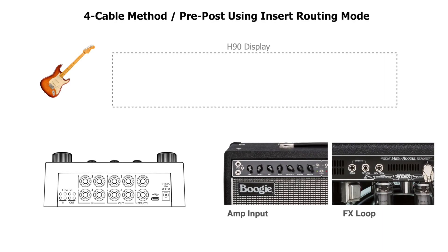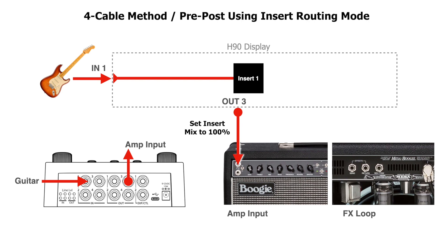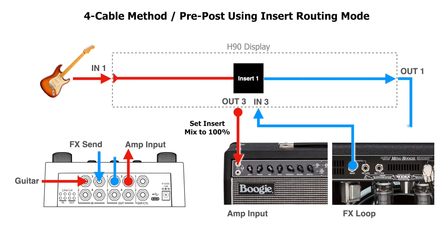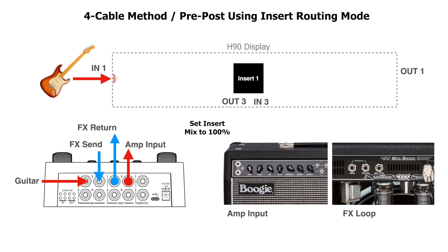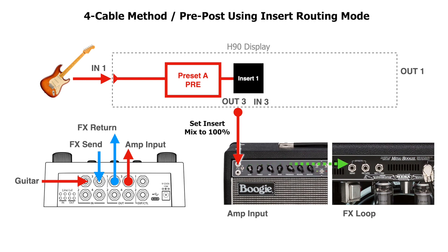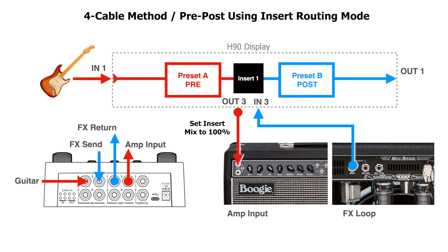Using insert routing for pre-post: connect the guitar to in 1 of the H90. From out 3, connect to the front of the amp. From the amp's effect send, connect to in 3 on the H90. From out 1 of the H90, connect to the amp's effects return. The signal goes into the pedal and then into the first algorithm, then travels out of the insert send to the front of the amp through its preamp section. After the preamp section, the signal travels back to the H90 via the insert return and through the second algorithm, then the pedal's output gets returned to the amp through the effects return.